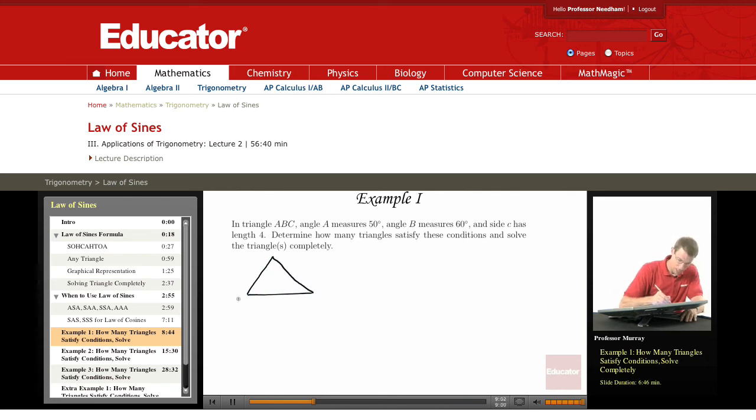So I've got triangle ABC. Remember you use capital letters for the angles and lowercase letters for the sides. And you always orient them so that lowercase a is opposite angle A. That puts b down here and c over here.